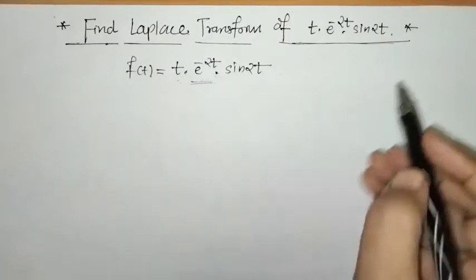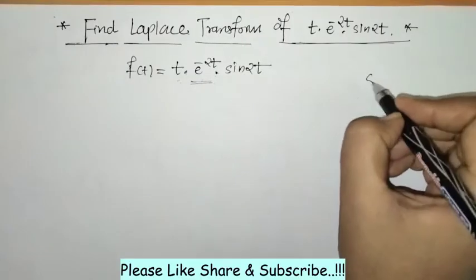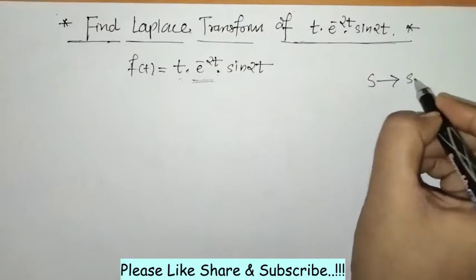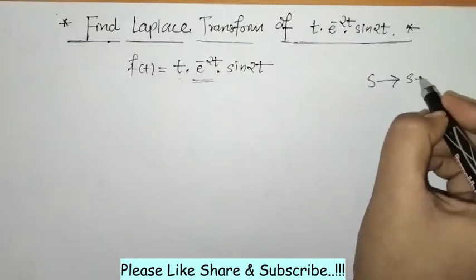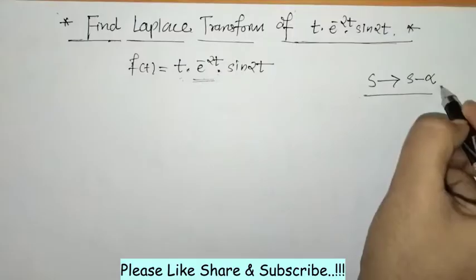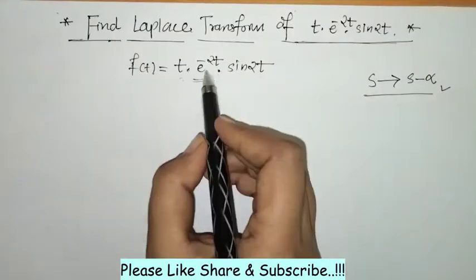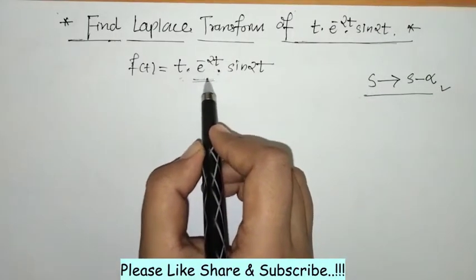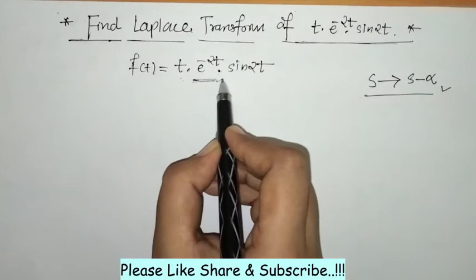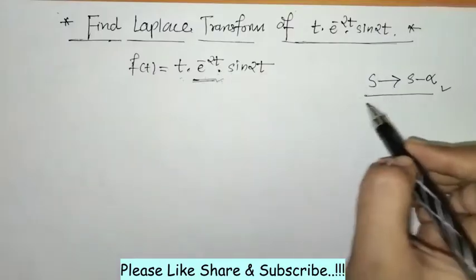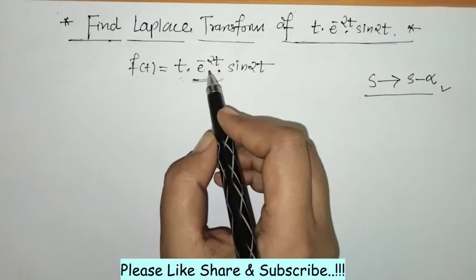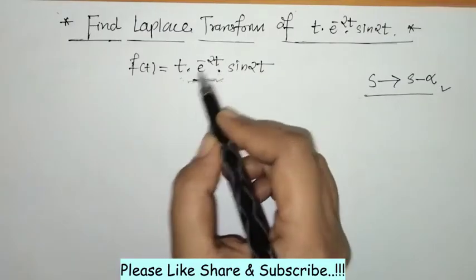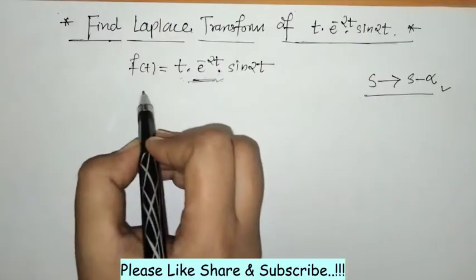In the first shifting property, what changes occur? s gets shifted to s minus alpha, where alpha is the coefficient of the variable t in the exponential function. So finally, at last, we have to apply the first shifting property.